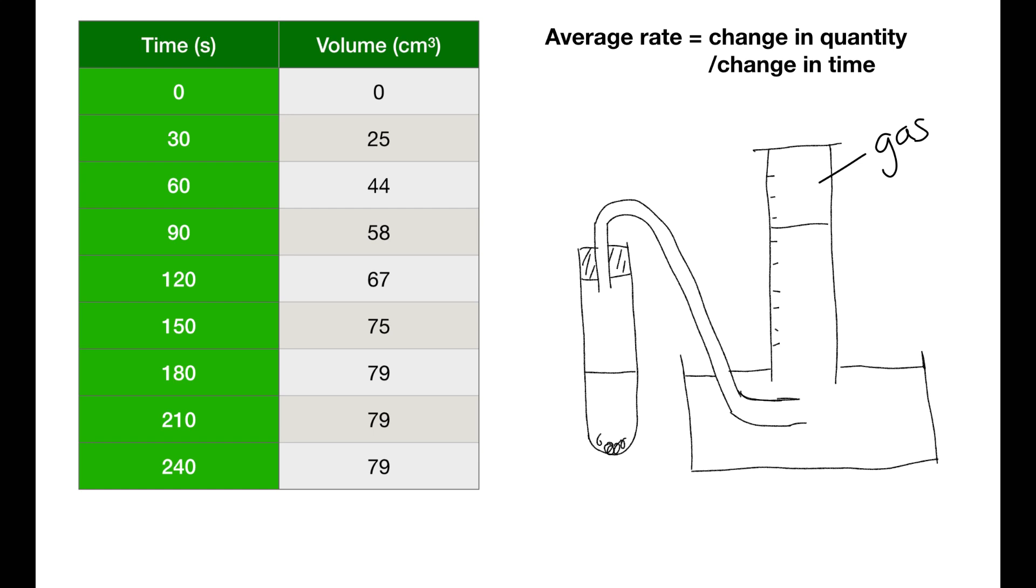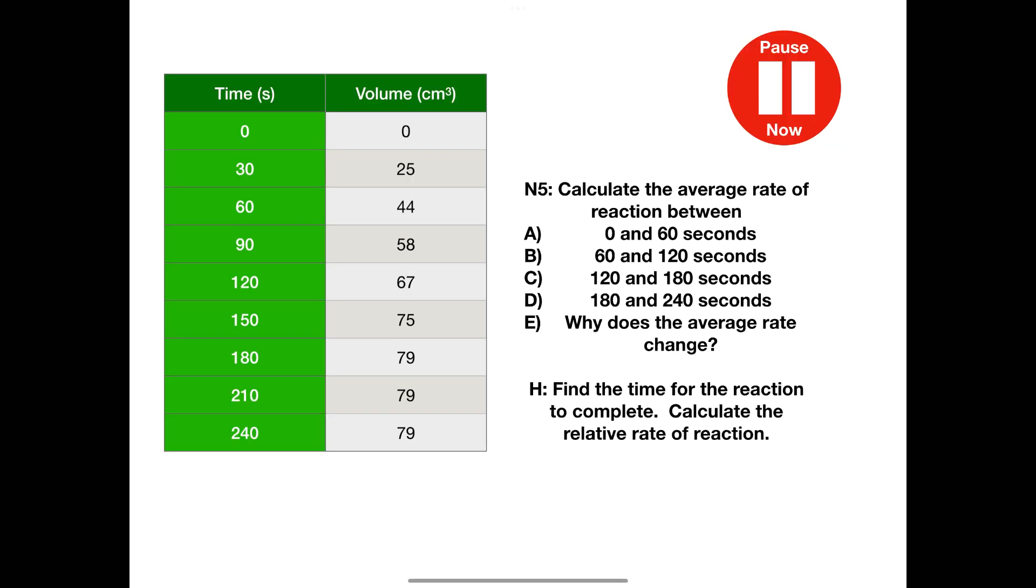You can then use your average rate equals change in quantity divided by change in time calculation to work out the average rate for different sections. This is an example of the sort of diagram of the equipment that you are using as well. Pause the video now and try these calculations. There are different calculations for National 5 and higher.